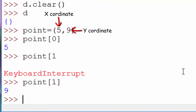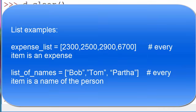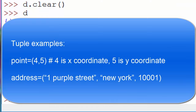In this example, 5 and 9 represent different concepts — one is an x-coordinate and the other is a y-coordinate — so it's appropriate to use a tuple. If all values were x-coordinates you'd use a list. Examples of lists are an expense list or a list of people's names. Examples of tuples are a point or an address, where the individual values are different: street name, city name, and zip code.